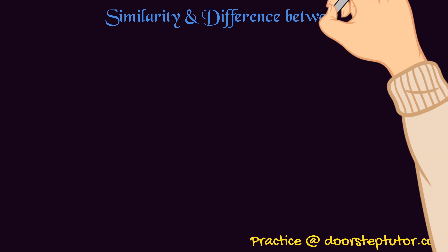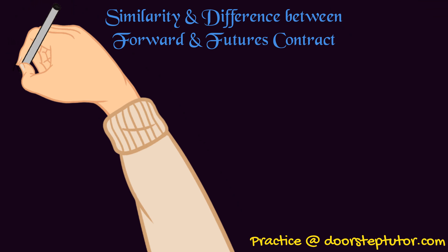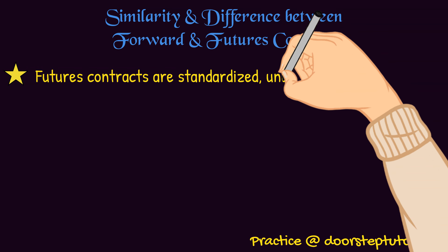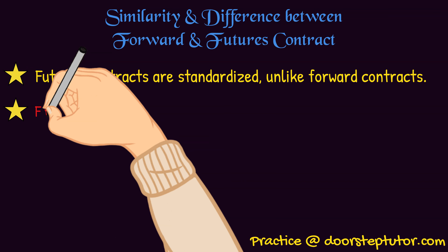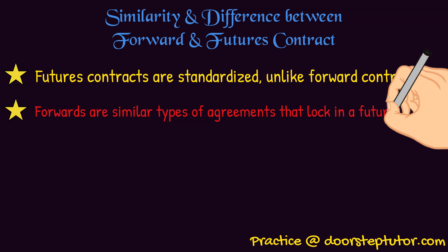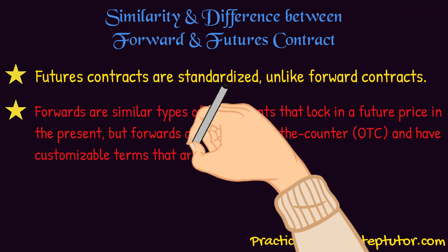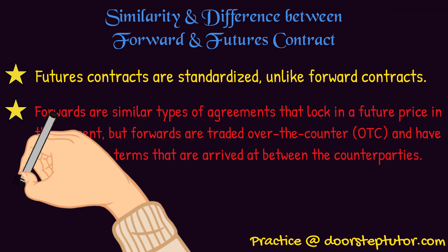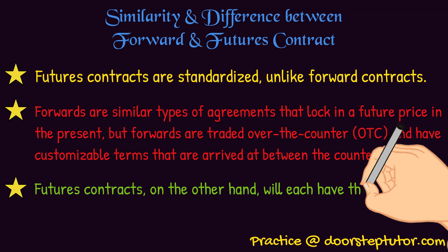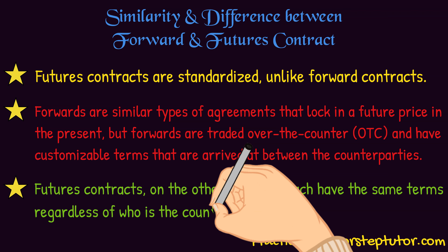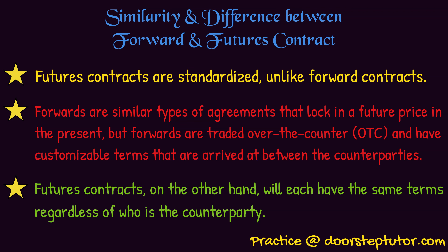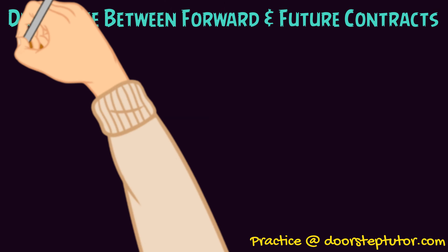Similarity and difference between forward and futures contracts: futures contracts are standardised. Unlike forward contracts, forwards are similar types of agreements that lock in a future price in the present, but forwards are traded over the counter and have customisable terms arrived at between the counterparties. Futures contracts, on the other hand, will each have the same terms regardless of who is the counterparty — terms and conditions in the futures contract remain the same for all.